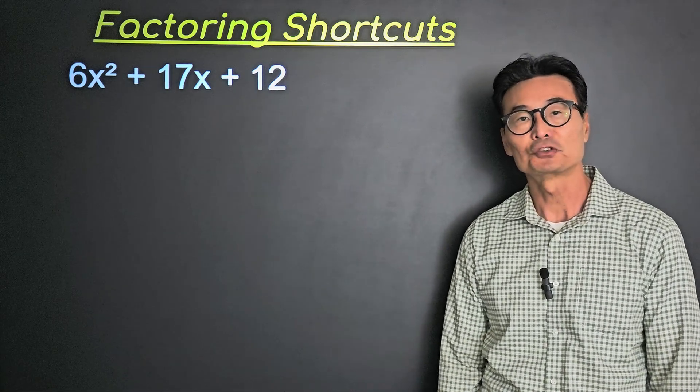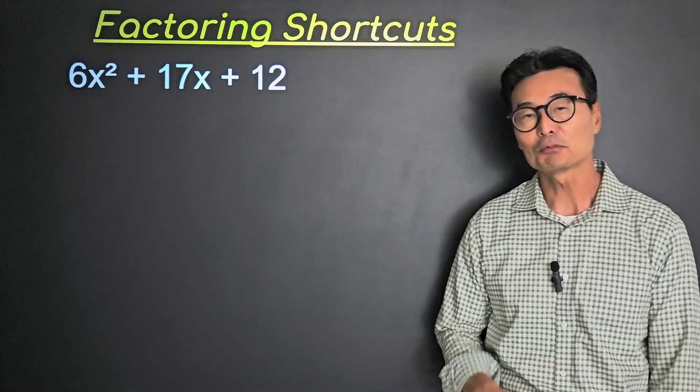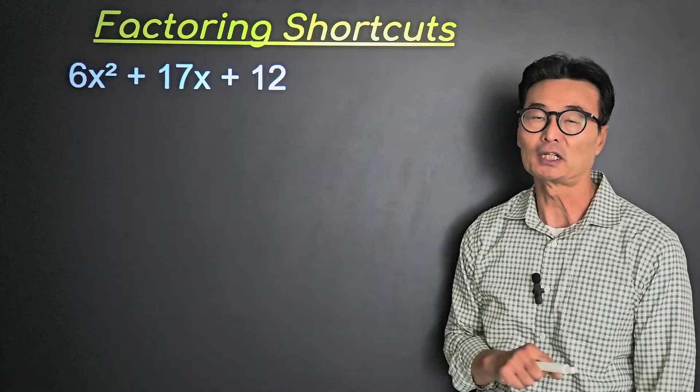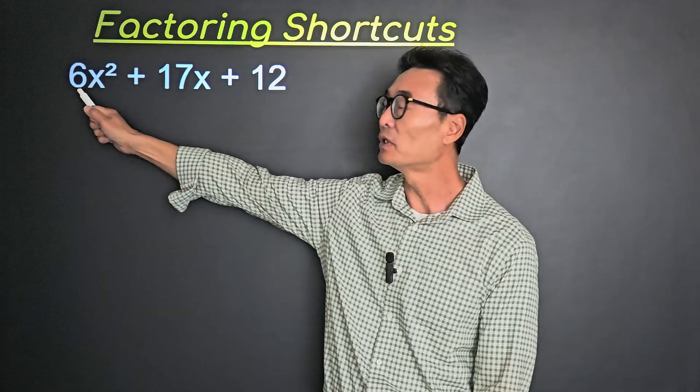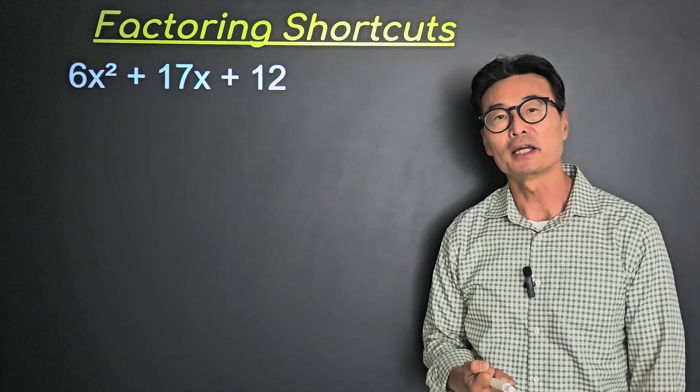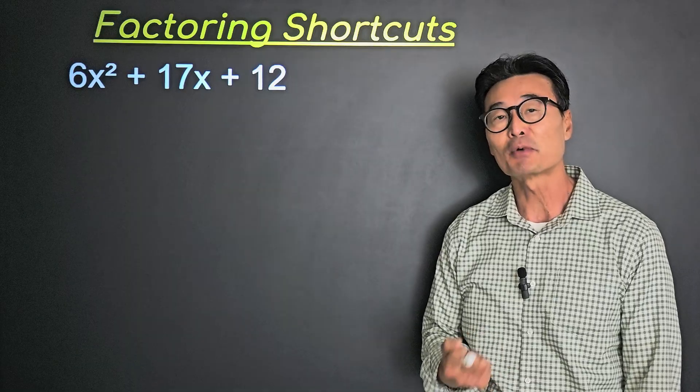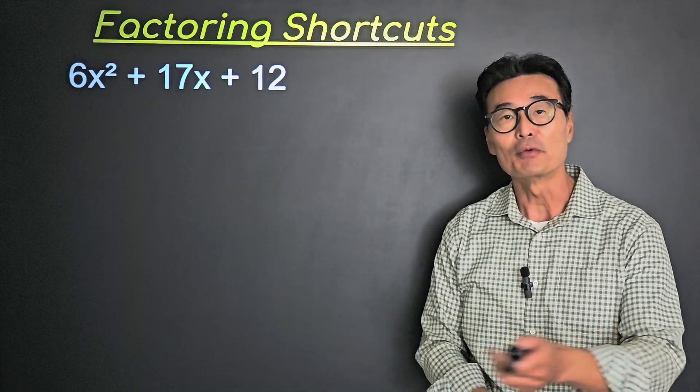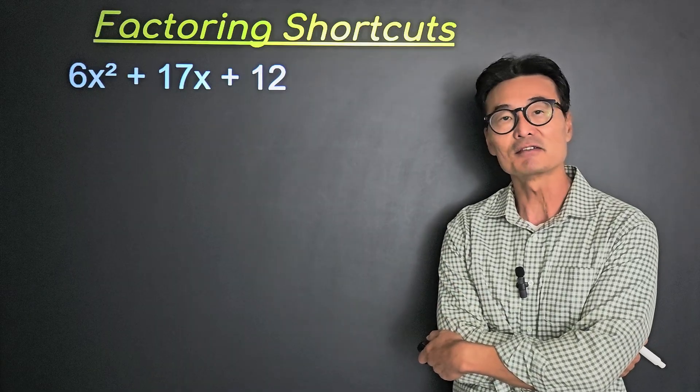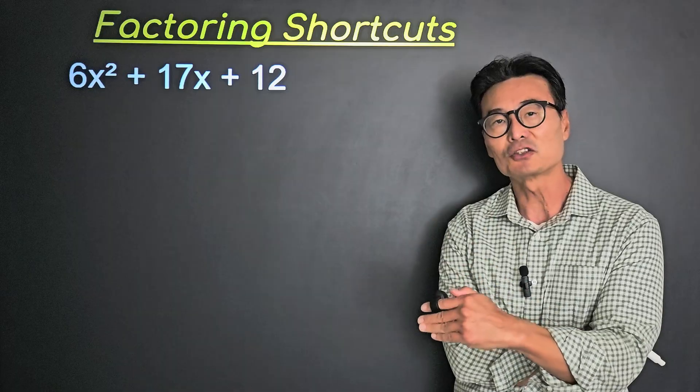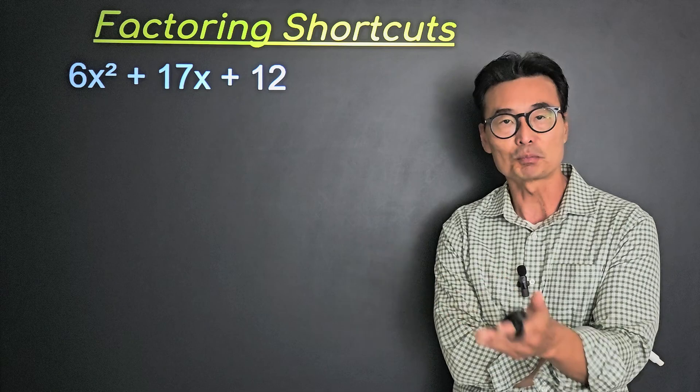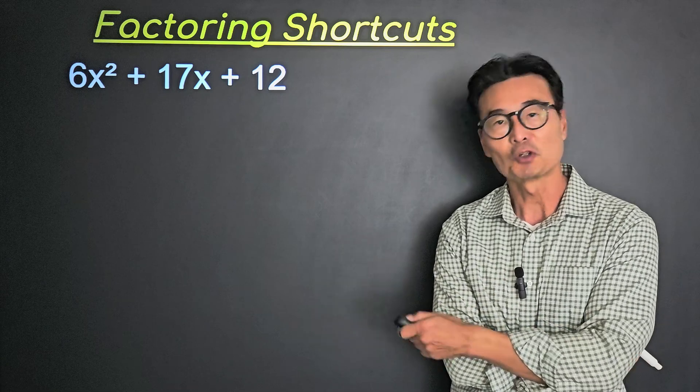In this lesson, continuing from algebra to lesson number 17, I'm going to show you how to factor trinomials using shortcuts, especially when the coefficient of x squared is not 1. If you want to learn the proper way or why factoring works, then I recommend that you review lesson number 17 first before you look at this lesson. This lesson shows you how to get to the answer or factor trinomials as quickly as possible without going through the proper steps.